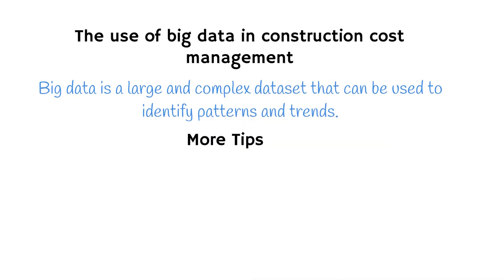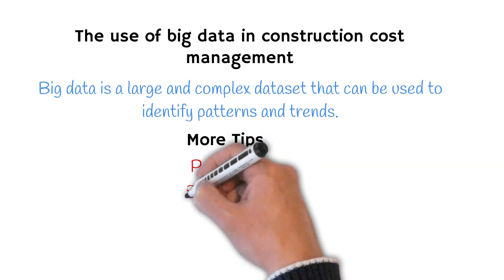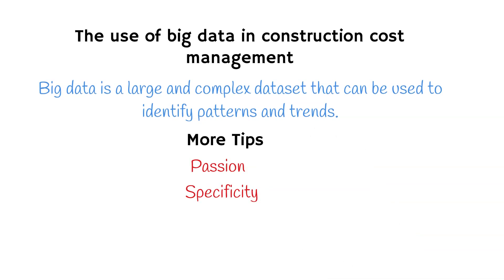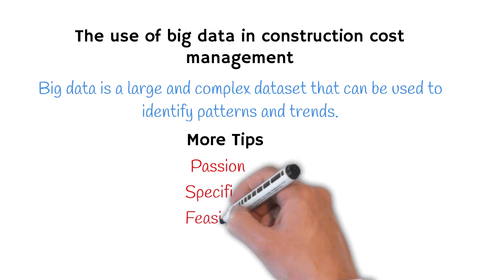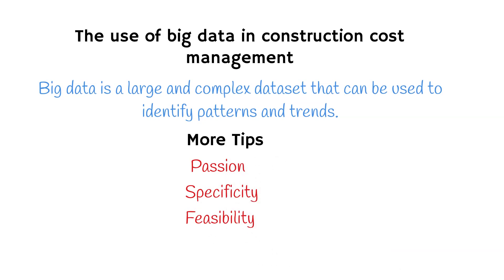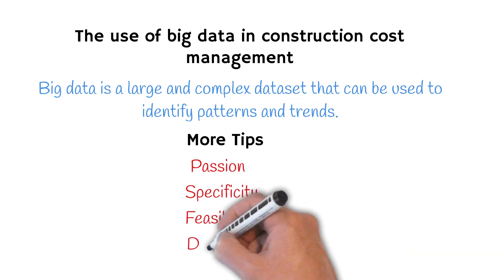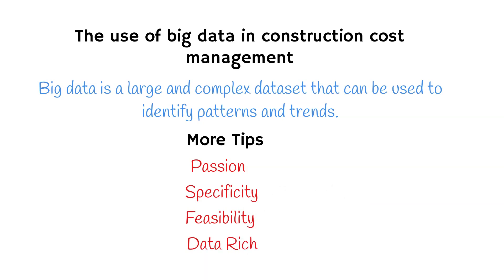Here are a few additional tips for choosing a dissertation topic. Number 1: choose a topic that you're passionate about — this will make the research process more enjoyable and motivating. Number 2: choose a topic that is narrow enough to focus on in depth, but broad enough to find enough information about. Number 3: choose a topic that is manageable and achievable within the timeframe that you have. Number 4: make sure there is enough data and resources available to support your research.